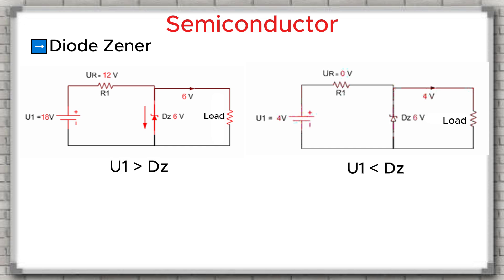If U1 is less than the zener voltage, then the zener diode does not regulate, and its voltage will change as U1 changes. But if U1 is greater than the zener voltage, the zener diode clamps the voltage, and the output stays fixed at the zener value.